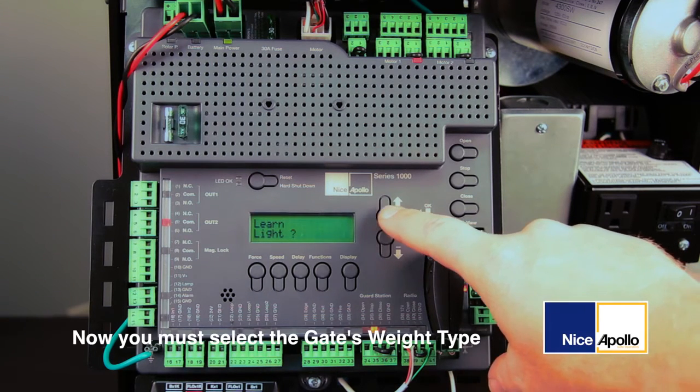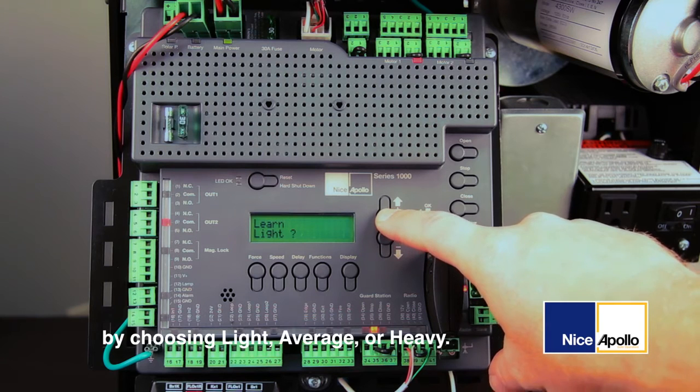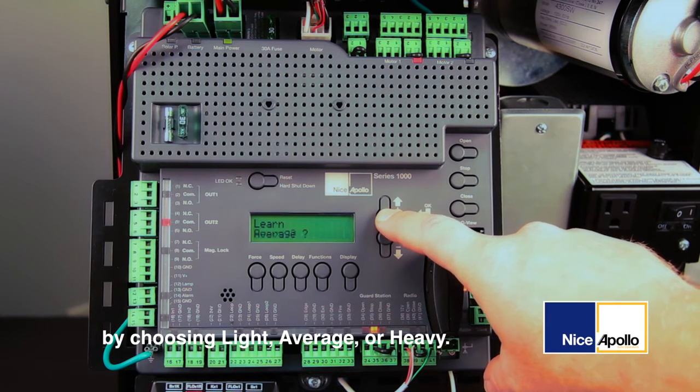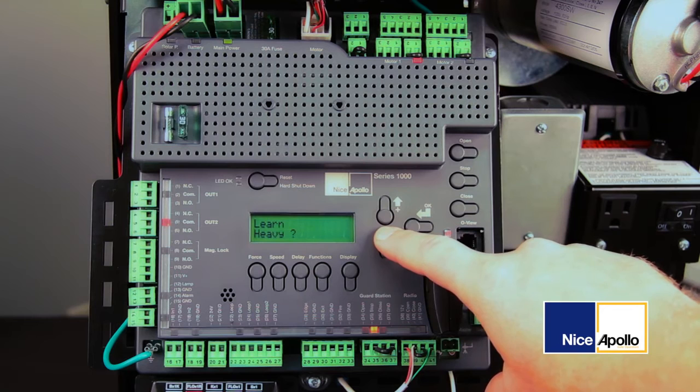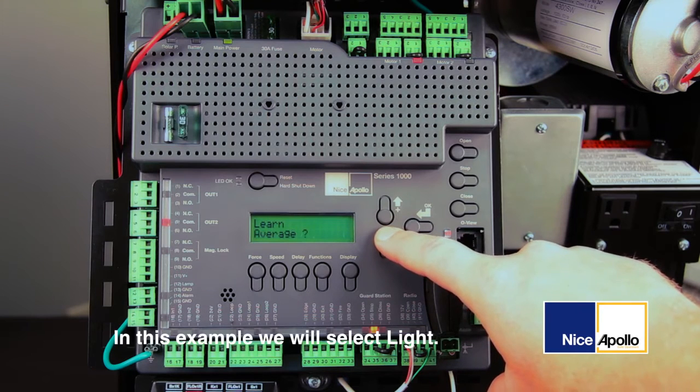Now you must select the gate's weight type by choosing light, average, or heavy. In this example, we will select light.